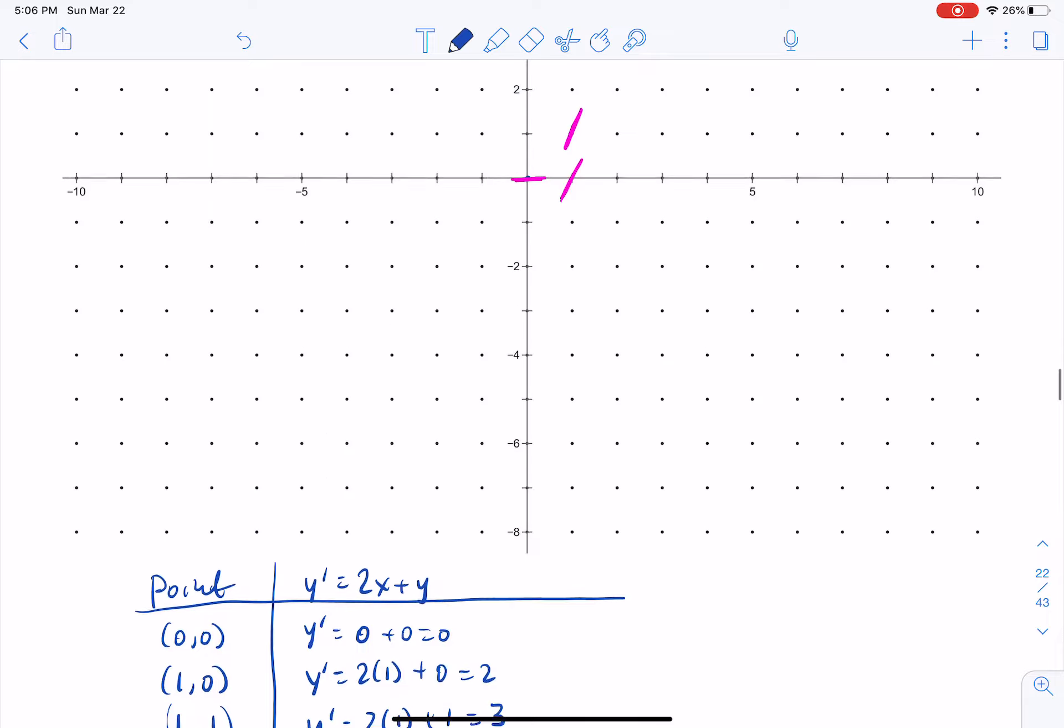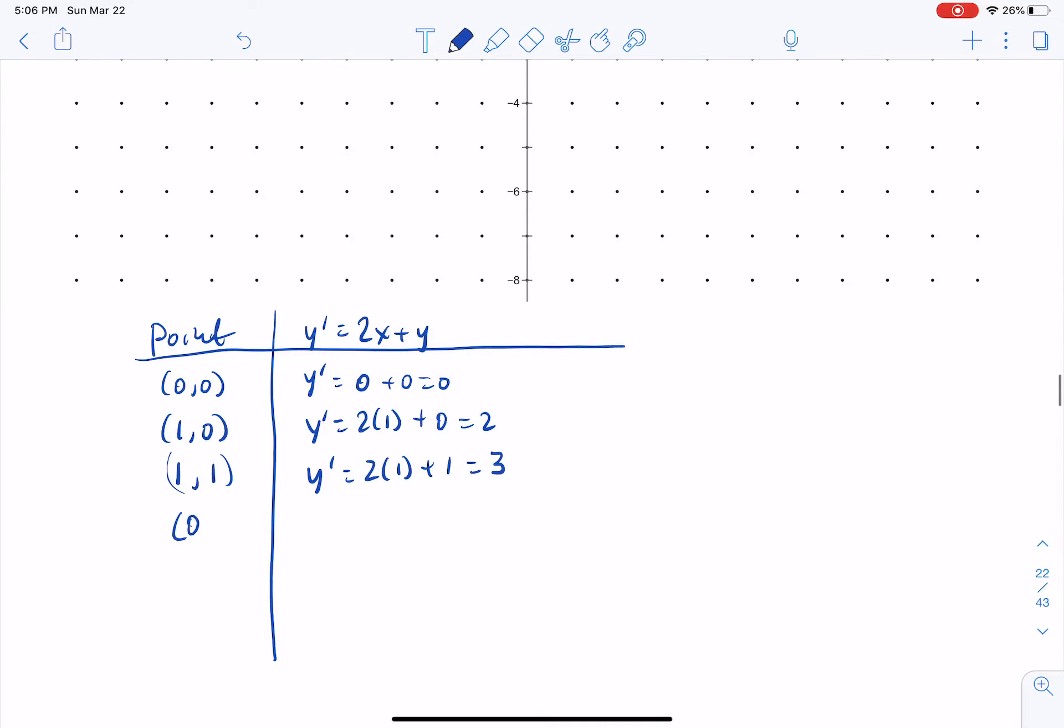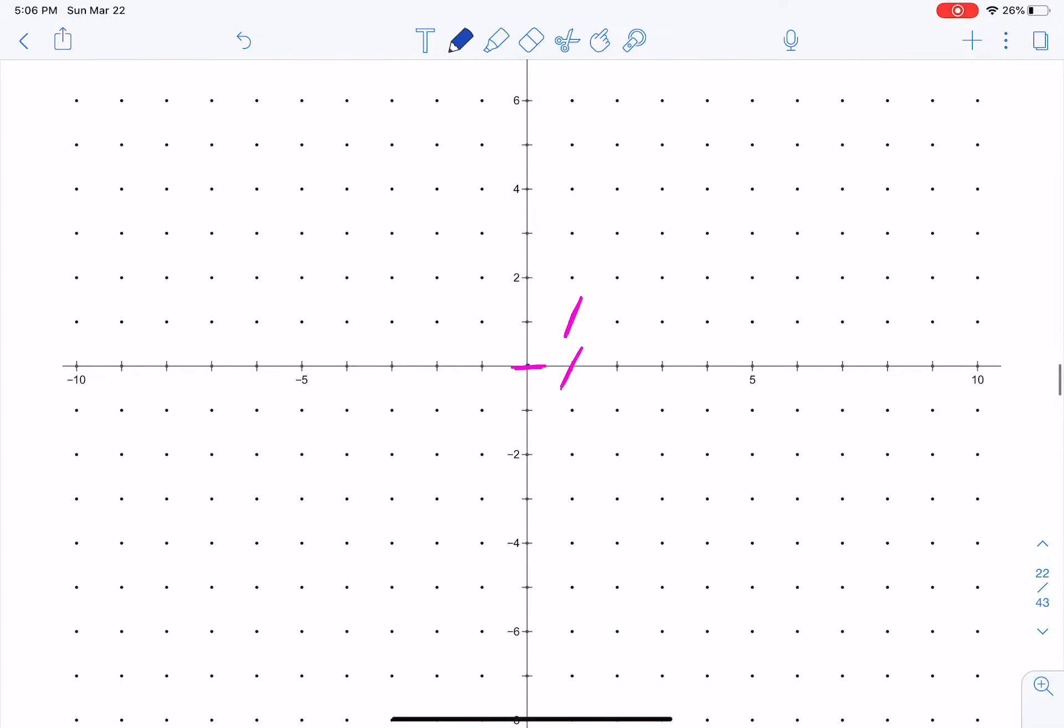How about (0, 1)? Y prime is equal to 2 times 0 plus 1, just a slope of 1 at that point. A little less steep than the ones surrounding it, so this slope should go right there, just make a tiny little segment and erase the rest of it. I'm going to have you pause the video and see if you can generate a few more of those points, maybe something over here in the second and the third quadrant, just to get some practice plotting a slope field, and then unpause the video when you're done.